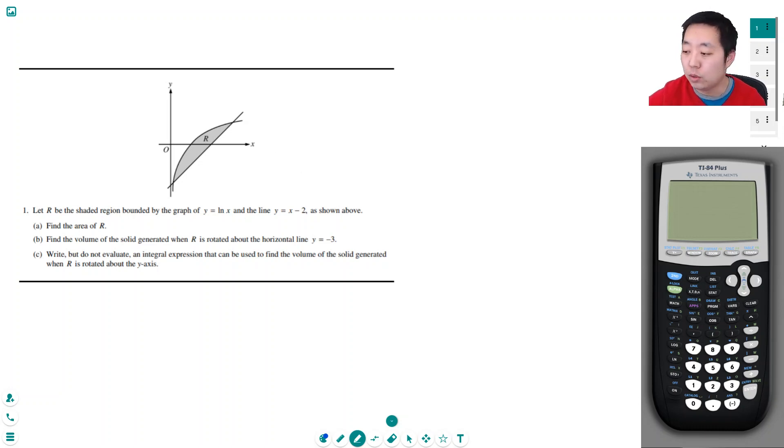I got the graphing calculator up to work on this section of the exam. So we have let R be the shaded region bounded by the graph y equals natural log of x, that's this one here, and y equals x minus 2, this is a line here.